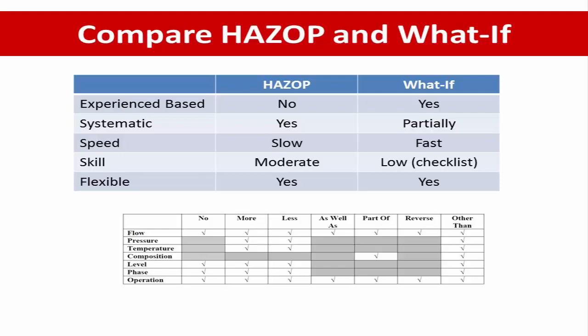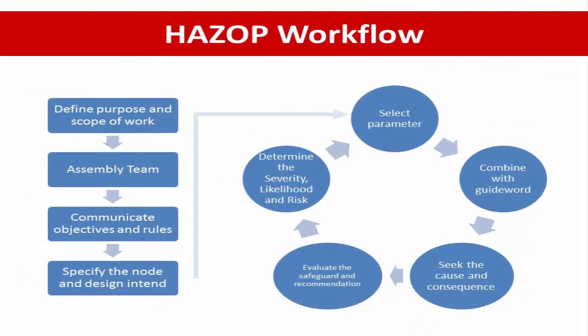The HACCP workflow starts with: first, specify the section or node to be examined; describe and discuss the process conditions and steps of operation; then determine the design intent. Next, select a parameter — process parameters such as flow, pressure, temperature, or level.